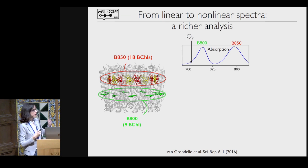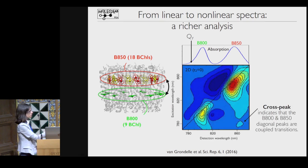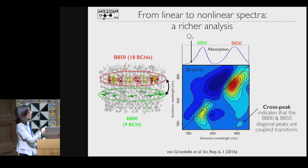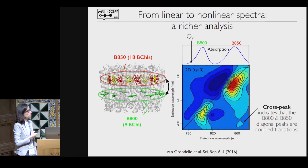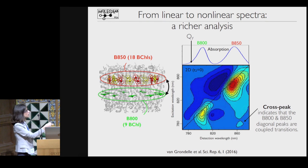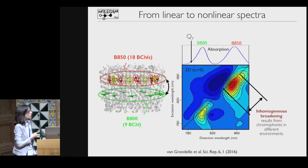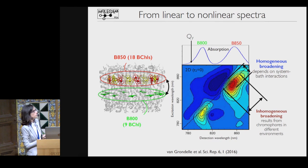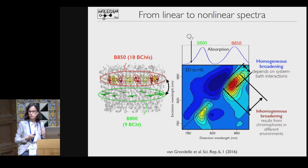Going beyond linear spectra, I can look at the 2D spectrum. This is an experiment by the group of Van Grondel in Amsterdam. They did a 2D spectrum of this system, and what they observed at waiting time almost zero is the presence of a cross peak, which tells us that the two exciton rings are also coupled—a weak coupling, but it's still there. The broadening also gives a lot of information about the coupling of these excitations with the bath.